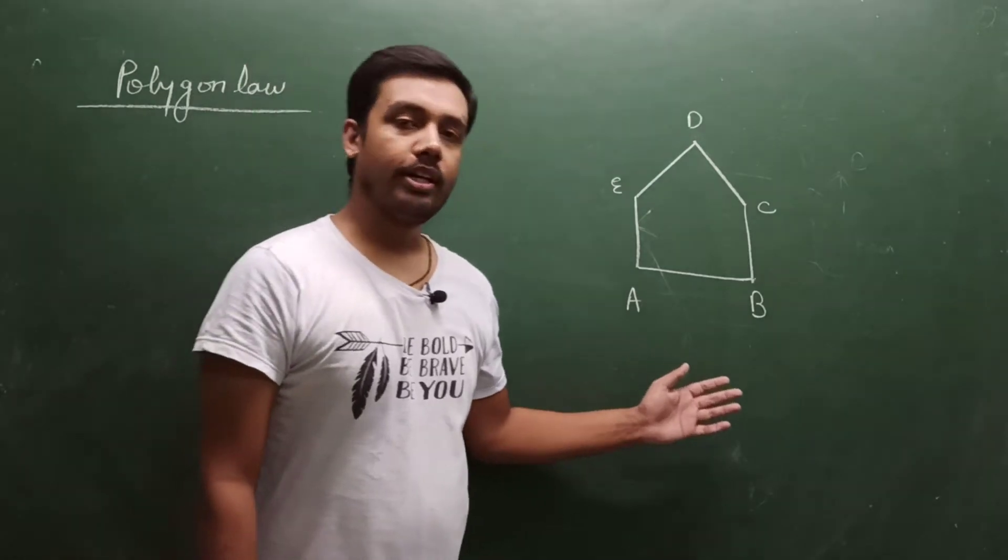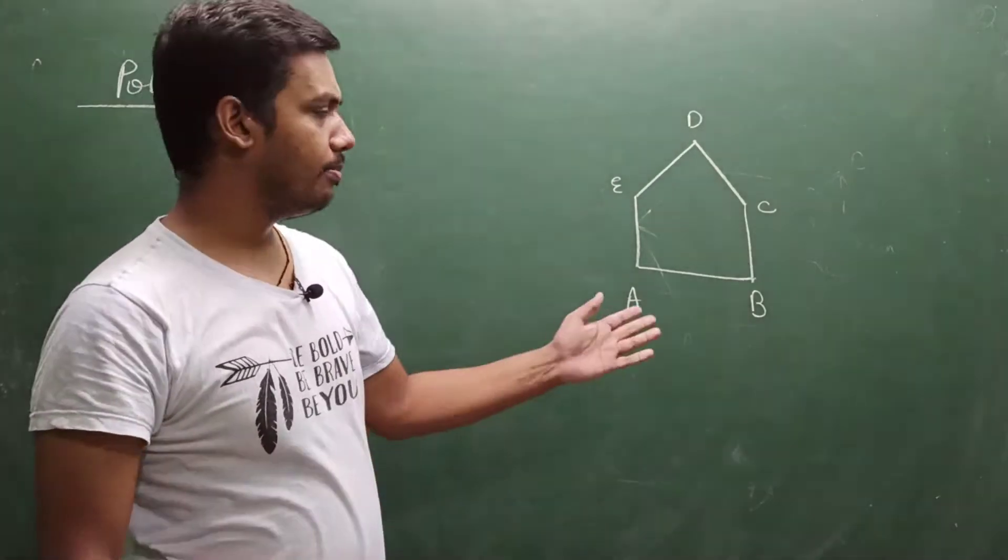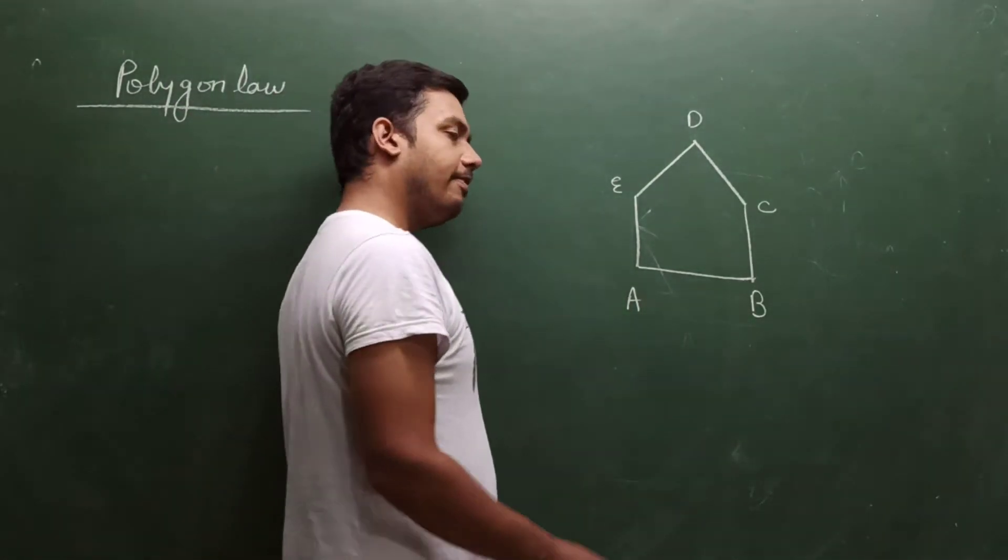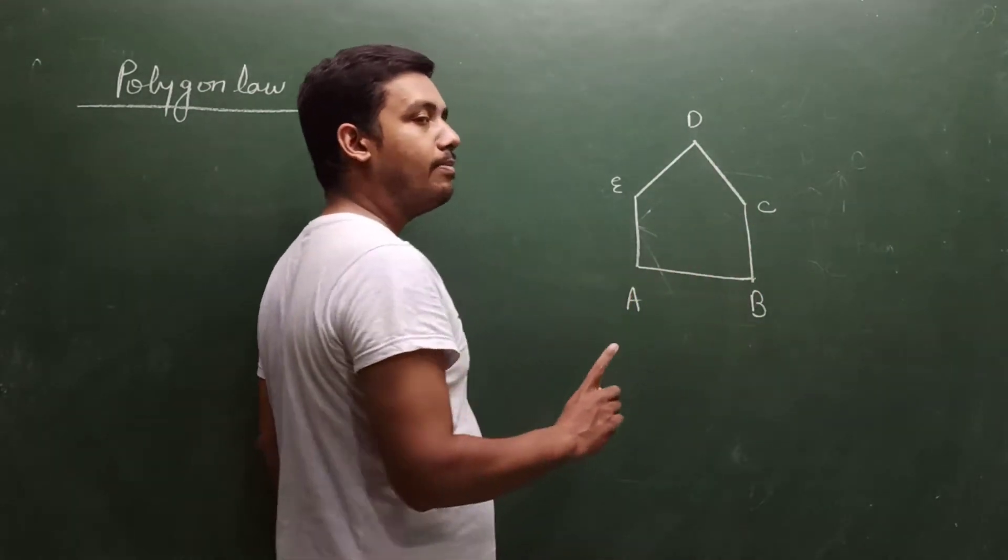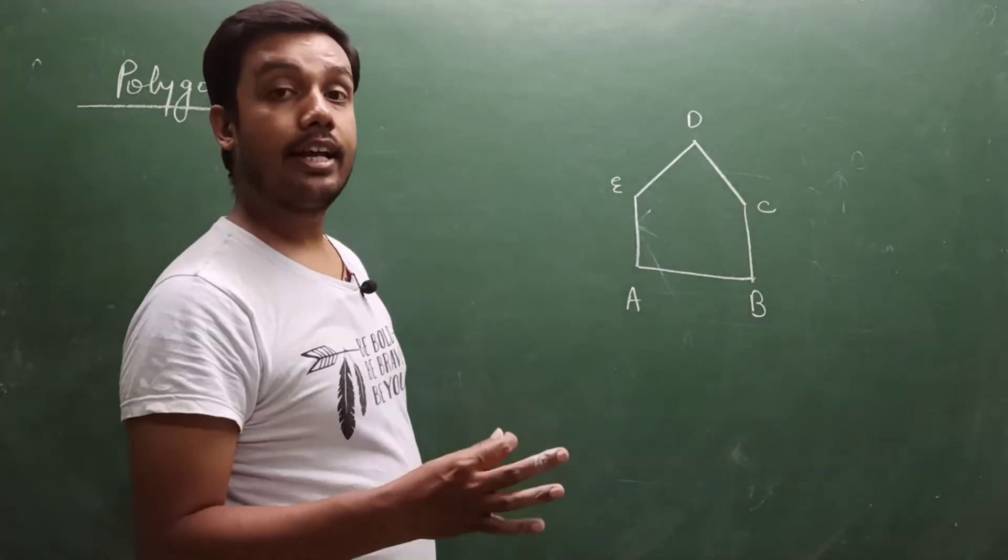Hello students, now we will read Polygon Law of Vector Addition. It is a simple law. What is it? If a number of vectors are represented by the sides of a polygon taken in the same order.